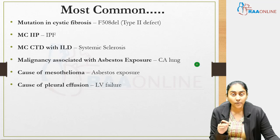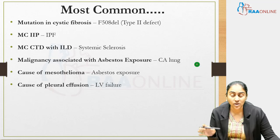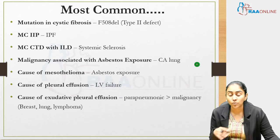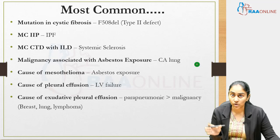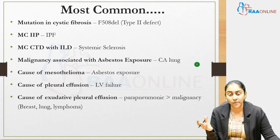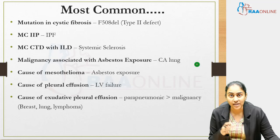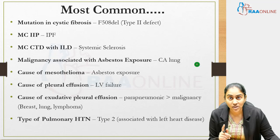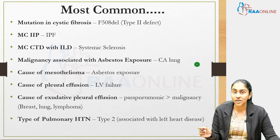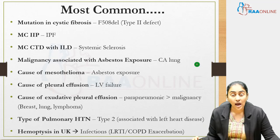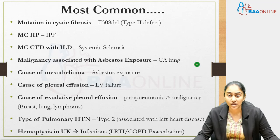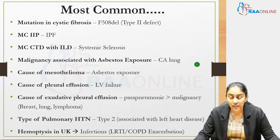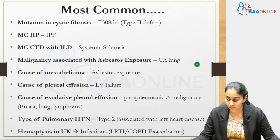The most common cause of pleural effusion is a transudative effusion due to LV failure, but the most common cause of exudative pleural effusion is infection — parapneumonic. The second most common is malignancy: CA breast, lung, or lymphoma. The most common type of pulmonary hypertension is type 2, associated with left heart disease. The most common cause of hemoptysis in the UK is infection — either an LRTI or a COPD exacerbation.